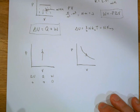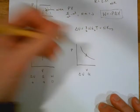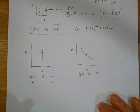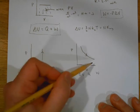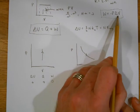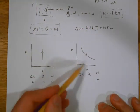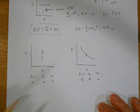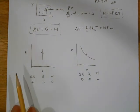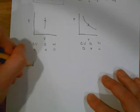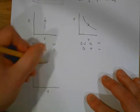For an isothermal process (constant temperature), ΔU = 0. If volume increases, the gas does work — W is negative from the gas's perspective, so energy leaves the gas. Since ΔU = 0, Q must be positive and equal in magnitude to W. No temperature change means internal energy doesn't change.